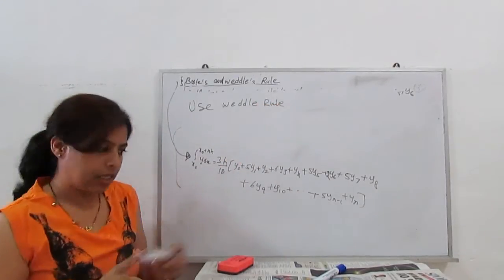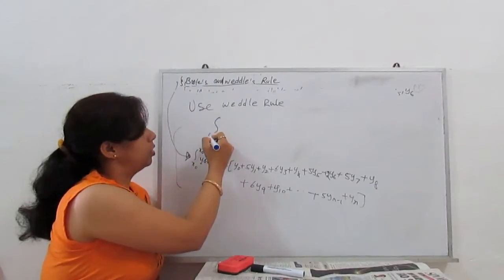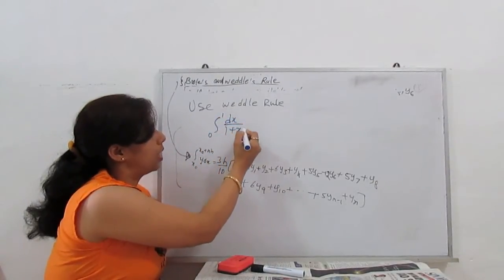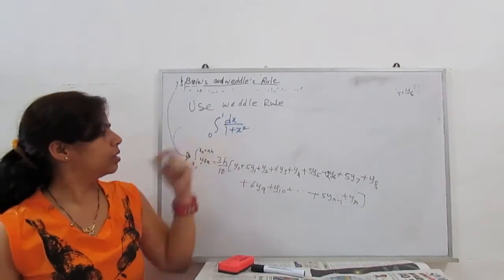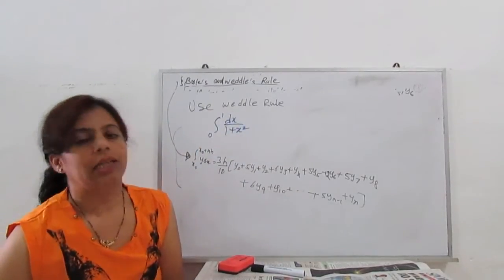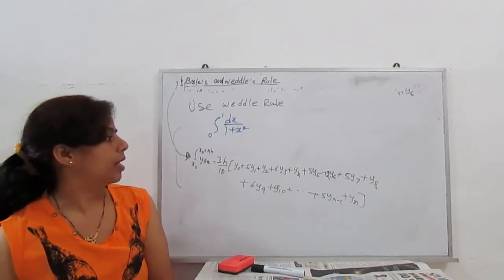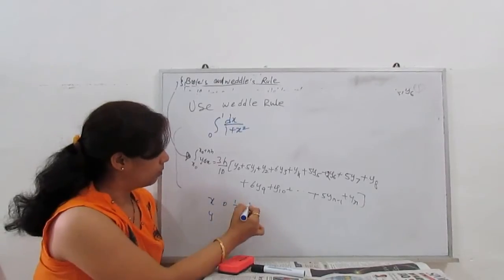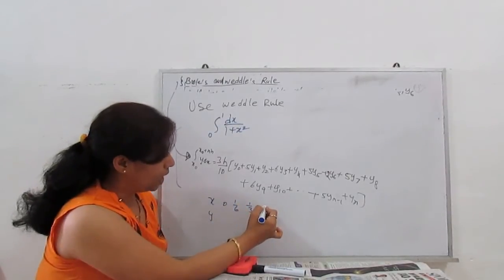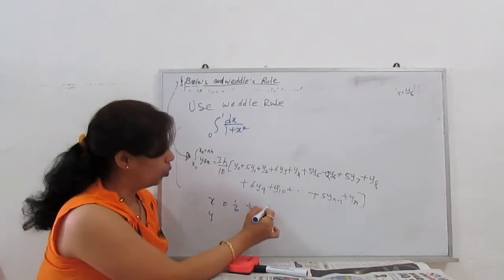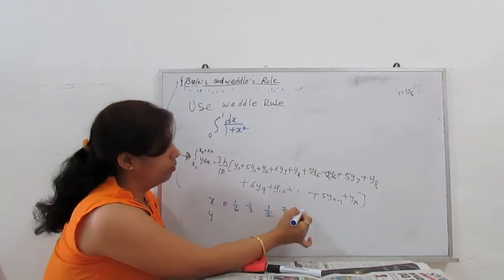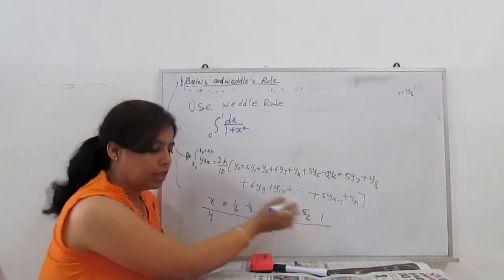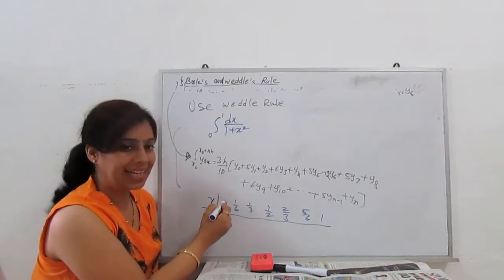So solve the integral 0 to 1, dx upon 1 plus x squared. We have to solve this. If we can make this in 6 intervals, then given the x and y: x0, 1/6, 1/3, then 1/2, 2/3, 5/6, and 1.